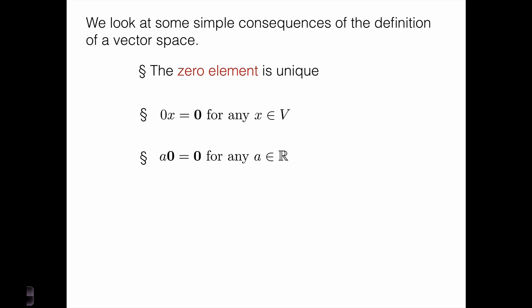For example, we can show that the zero element in a vector space is unique — you can't have two distinct zero elements. Also, in any vector space, the scalar zero times any element in the vector space is the zero element. Finally, a very useful property is that if we start with the zero element and multiply it by any scalar, we're still going to have the zero element. It's useful to build up these elementary tools for when we start talking about things like linear independence and more complex manipulations with vector spaces.